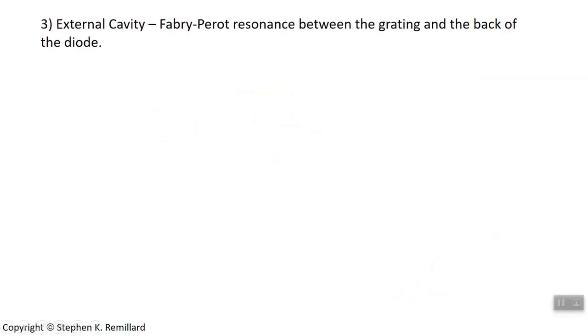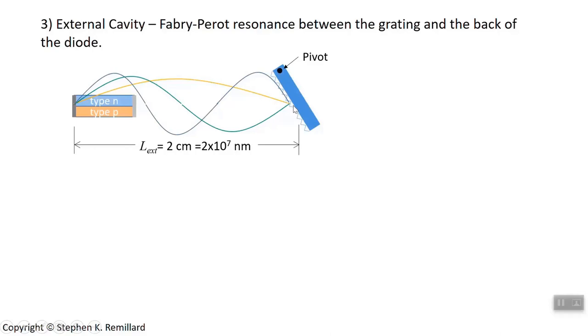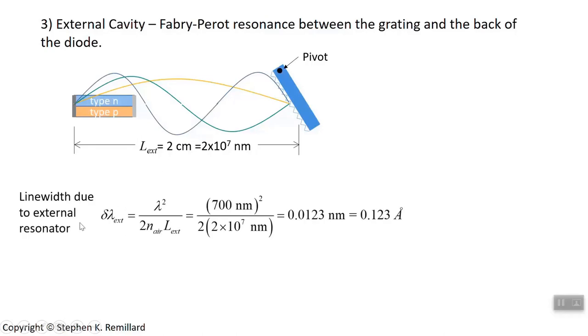We need a third thing. The third trick up our sleeve is to set up an external resonator and use its Fabry-Perot resonances. You notice that L in the denominator. If you have a very long cavity length, you get very narrow line widths. Set up an external cavity. We don't have to add anything. We're going to use the diffraction grating and the back surface of the die, which is highly reflecting. From the back surface of the die to the diffraction grating, we get Fabry-Perot resonators. The diffraction grating might be one or two centimeters away from the die, so it's a long ways.